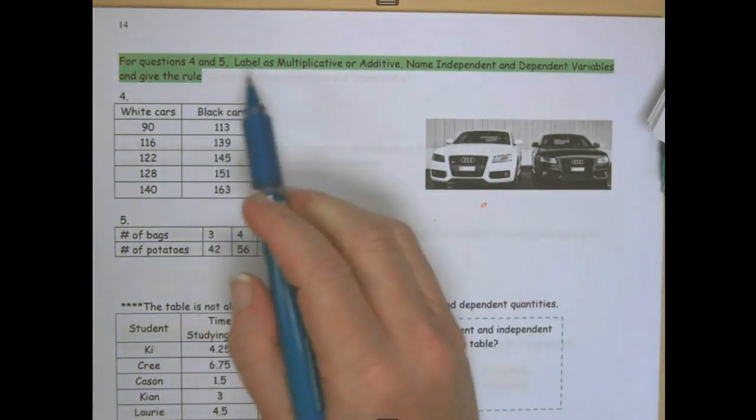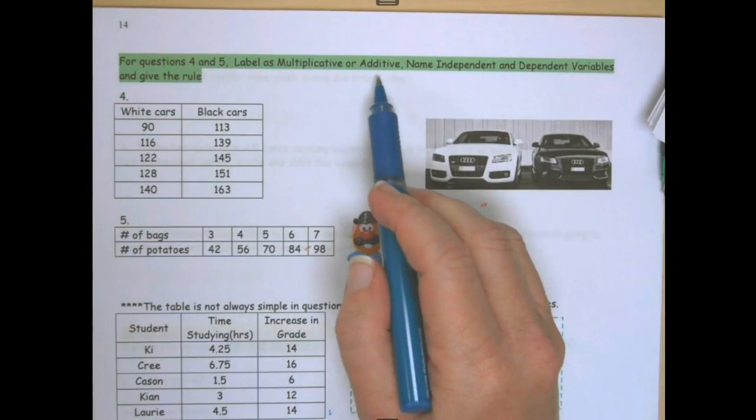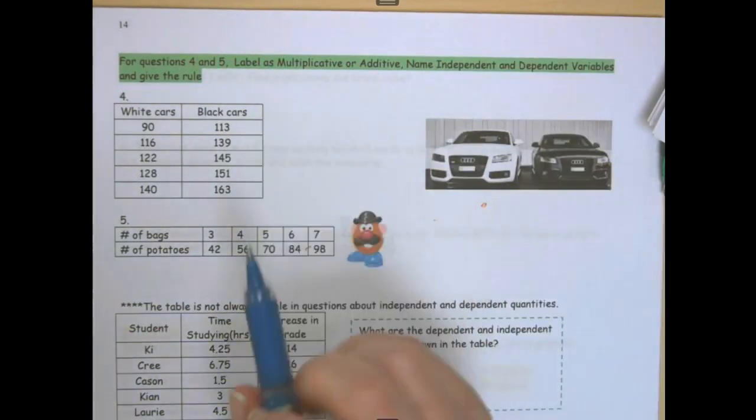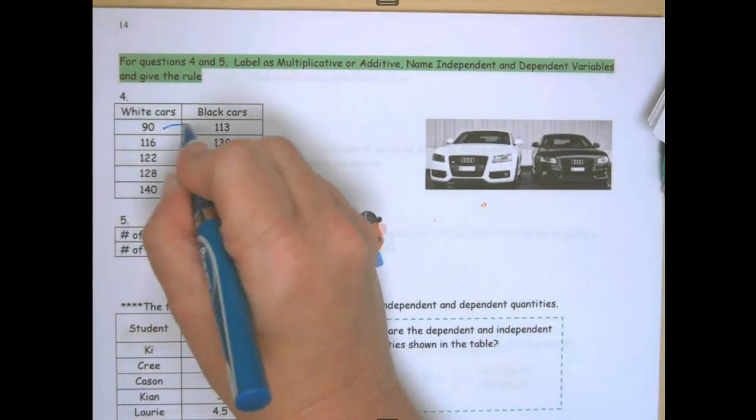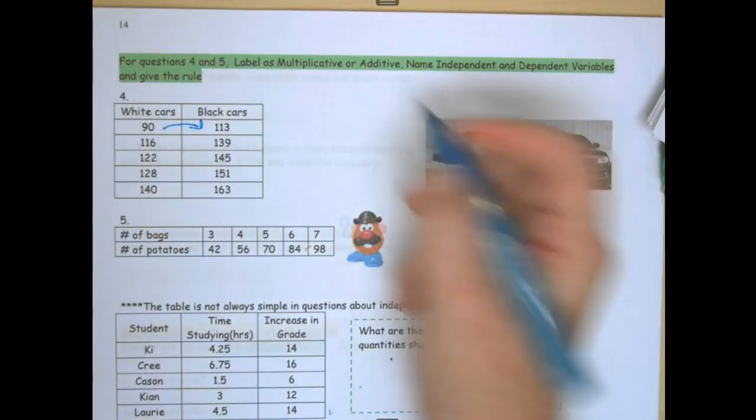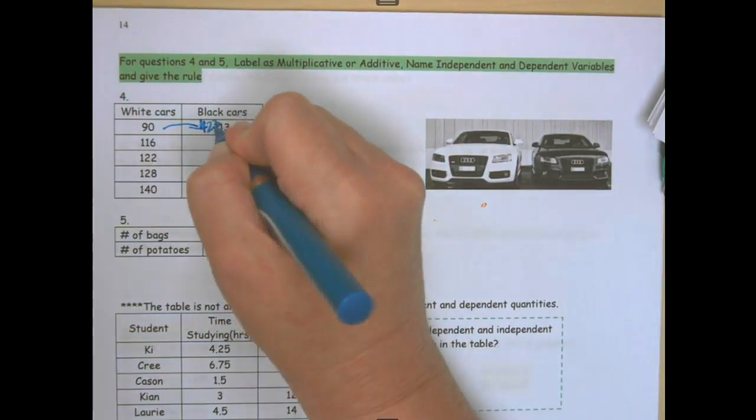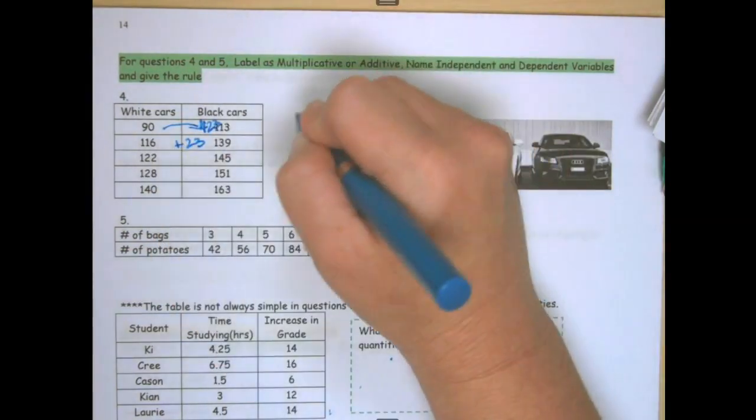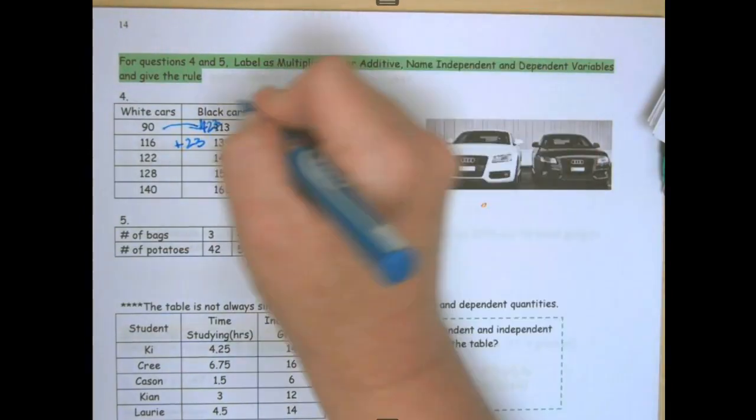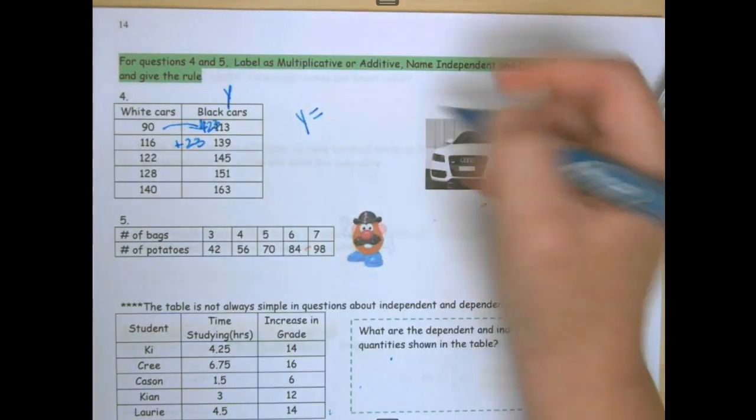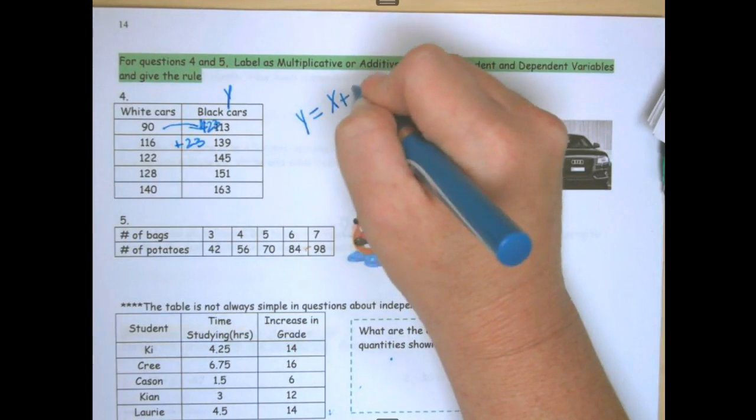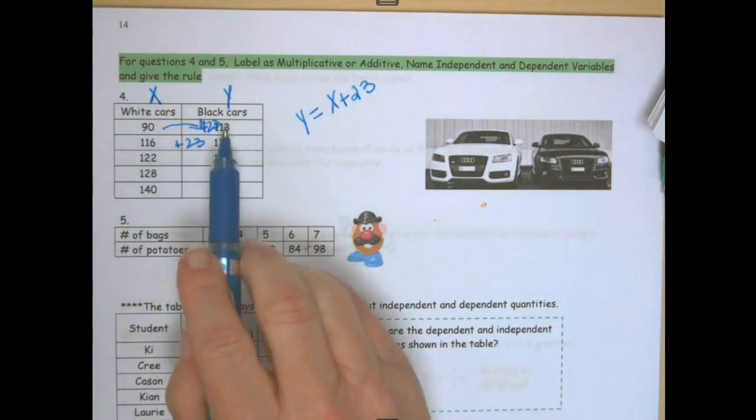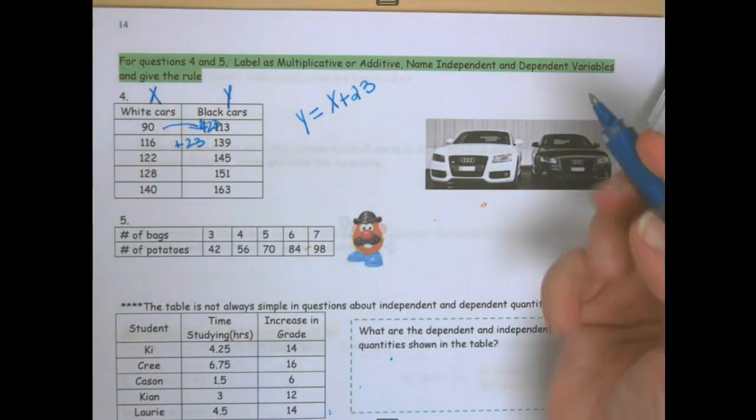For questions 4 and 5, label multiplicative, name independent variables, and give the rule. 9, 32, this is plus 23. So it's going to be y equals x plus 23. What are you doing to the white cars to get the black cars? You're adding.